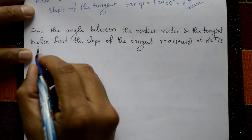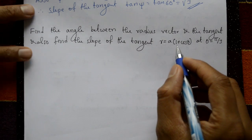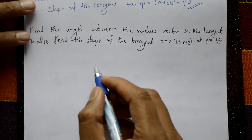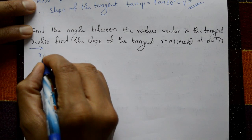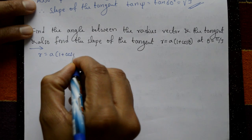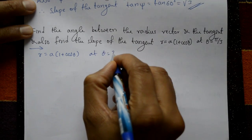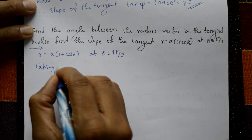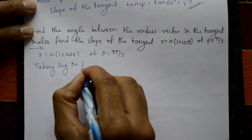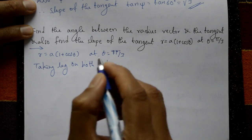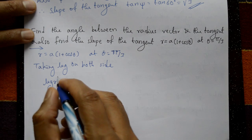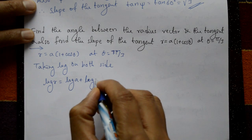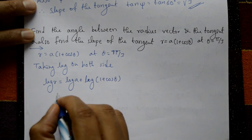Find the angle between the radius vector and the tangent, and also find the slope of the tangent. Given curve: r = a(1 + cos θ) at θ = π/3. Taking log on both sides: log r = log a + log(1 + cos θ). Then differentiate.